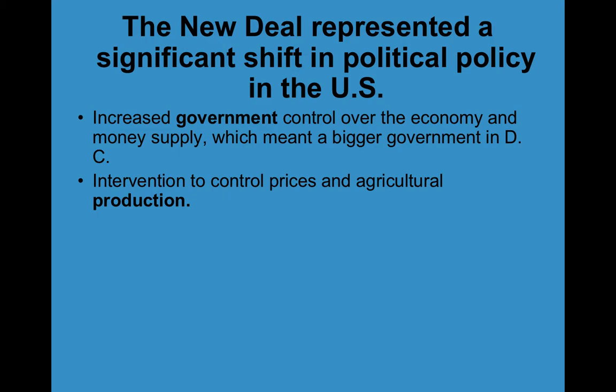The government was intervening to control prices and agricultural production. More government involvement — it was getting bigger. This is kind of the beginning of what you see as the federal welfare state, meaning the federal government will step in to help people who are unemployed or businesses that are failing — which we still have today.